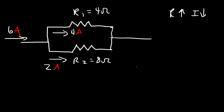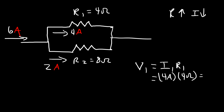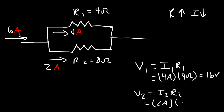If we calculate the voltage across each resistor, it's going to be the same. Using Ohm's law, V1 equals I1 times R1: 4 amps through a 4-ohm resistor gives 16 volts. V2 equals I2 times R2: 2 amps through an 8-ohm resistor also gives 16 volts. The voltage across two parallel resistors will always be the same.